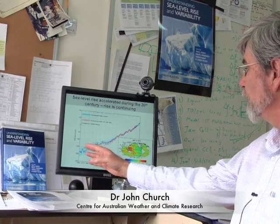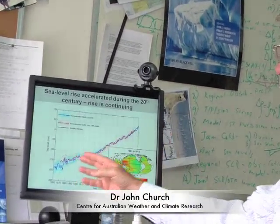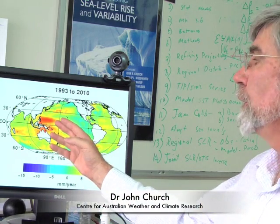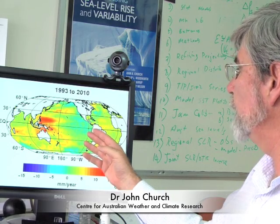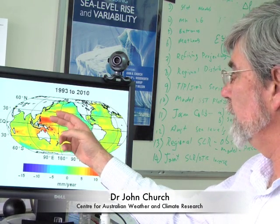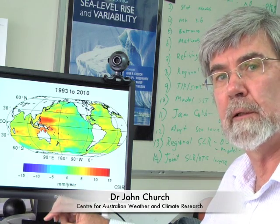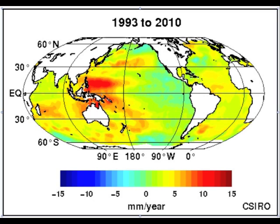The rise is not uniform, as we can see on this graph here. This is a global average rise during the 20th century which has increased during that period, but the rise is not uniform. There's a larger rate of rise in the Western Pacific and a smaller rate of rise in the Eastern Pacific. Indeed, the rate of rise in the Western Pacific and in the north of Australia is perhaps three times the global average rate of rise. This pattern is associated with changes in wind stress or the winds around the globe, and is also reflected in the depth of ocean warming — larger warming in the Western Pacific associated with increased easterly winds over this period.